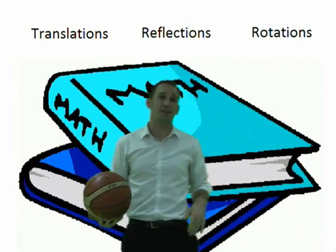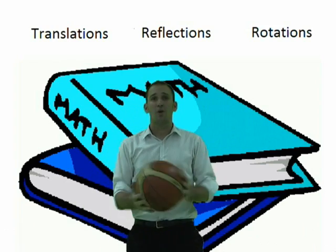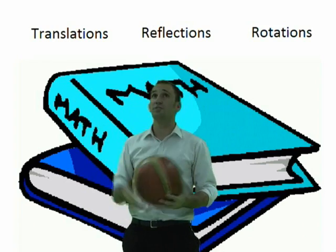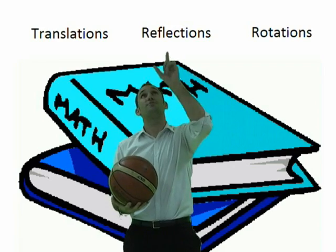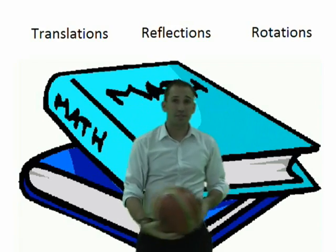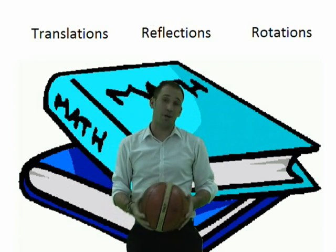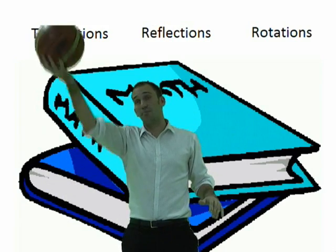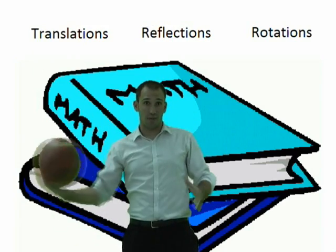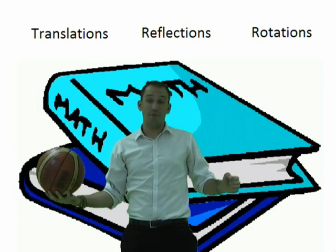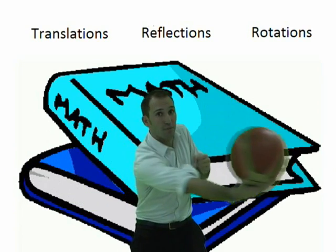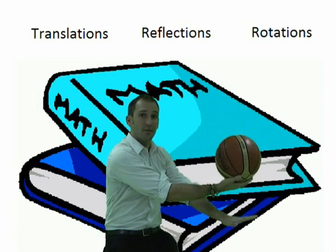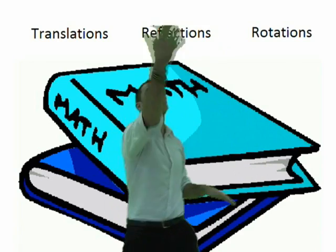Wow, there are lots of combinations out there. Well, in this lesson we're just going to be combining translations, reflections, and rotations. We might take some point or an object and translate it up or down or right or left, then rotate it around a point, or even reflect it over a line.